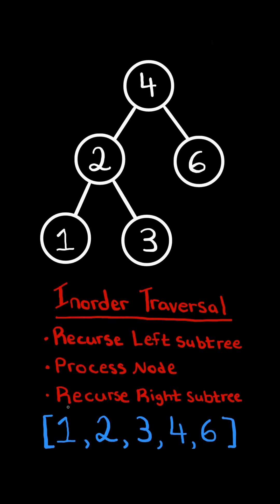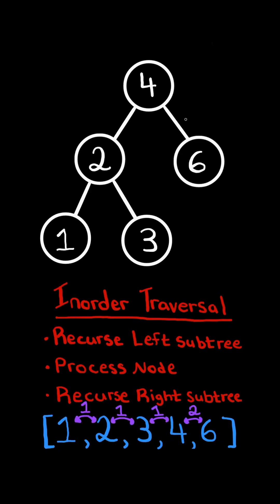At the very end, we would have traversed the tree in an increasing order, and along the way we could calculate the difference between adjacent values and keep track of the minimum difference we have seen.